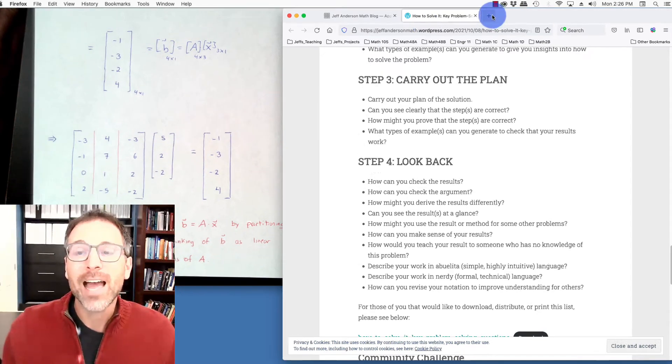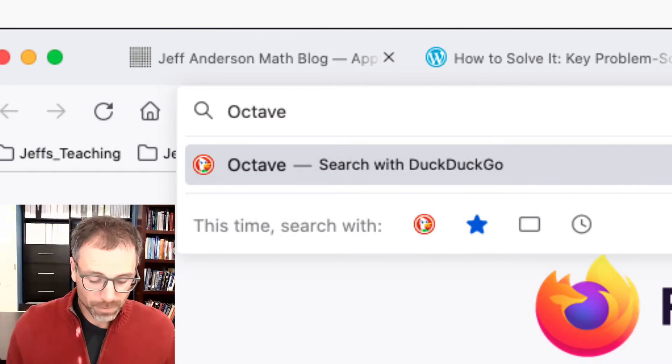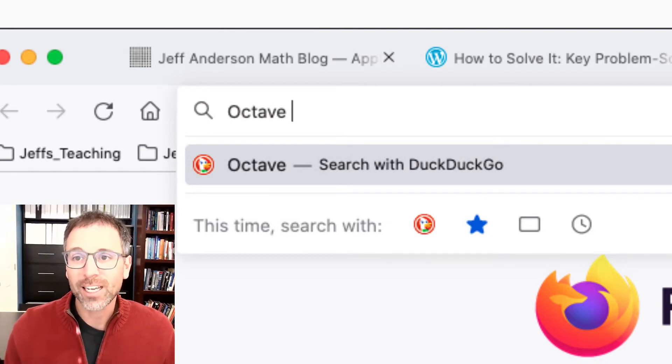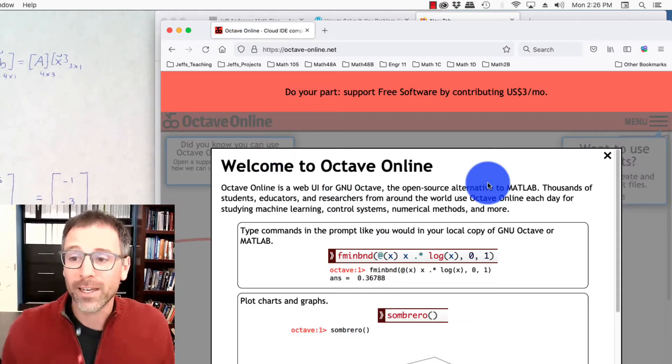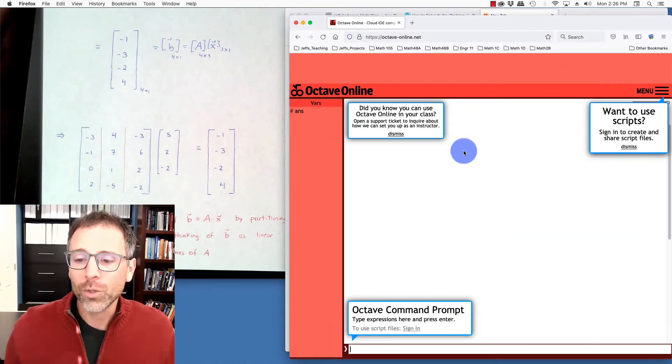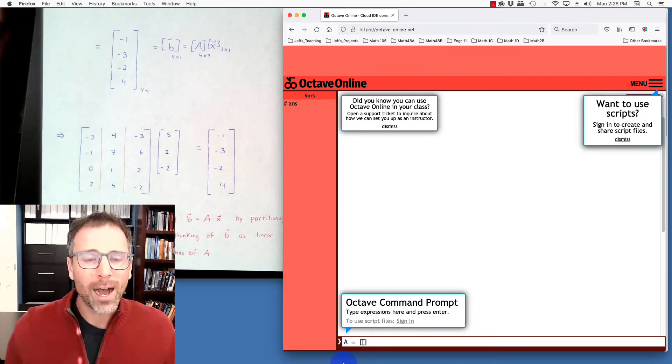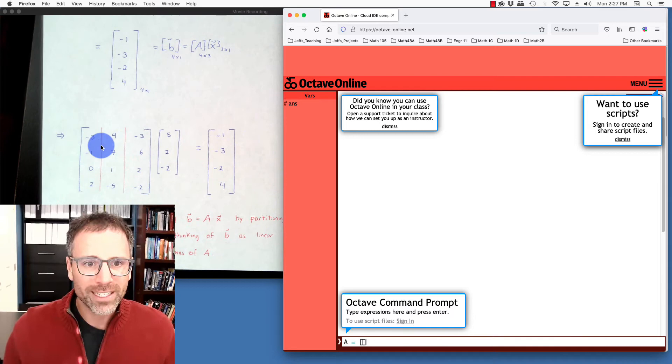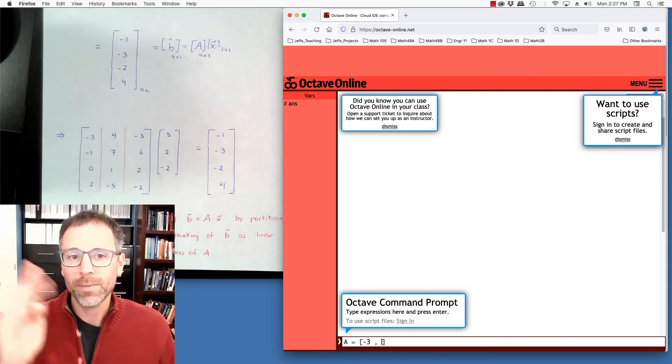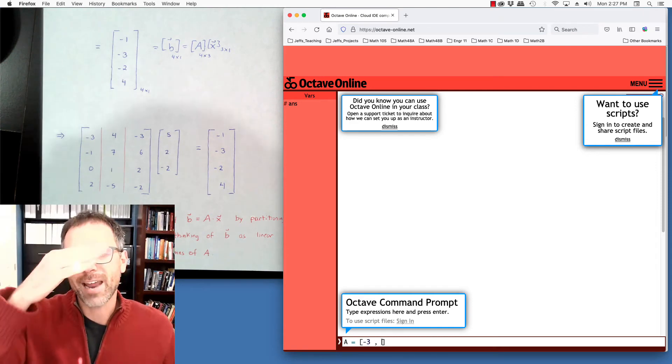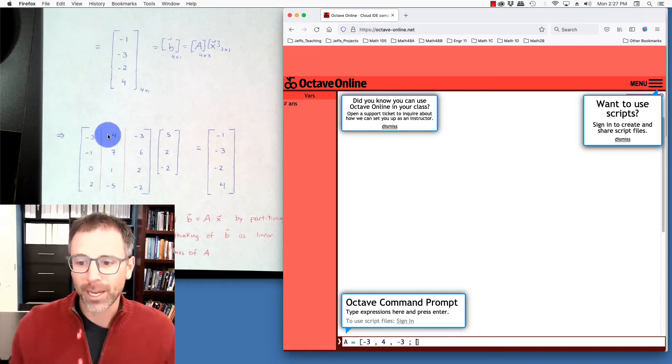So when we look back on this, here we did this by hand. Let's actually use some computer calculator, which is Octave Online. Octave is a free version of MATLAB. Let's go here and click on this. And then what we're going to do is we're going to calculate the same output using this. So we're going to enter this data. So it's negative 3 comma. So every column is delimited by a comma and every row is delimited by a semicolon. So 4 comma negative 3 semicolon.